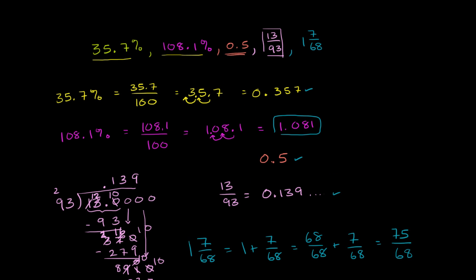So if we need to order these numbers, this is the largest. The largest is 1 and 7 68ths. The next largest was this 1.081, which in its original form was 108.1%. The next largest after that is this 0.5, and then we have the 0.357, which was the same thing as the 35.7%. And then finally the smallest value was the 13 over 93.